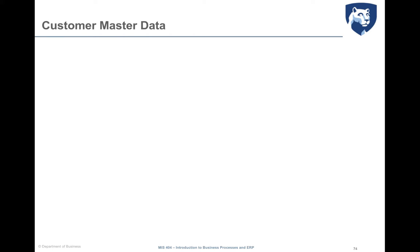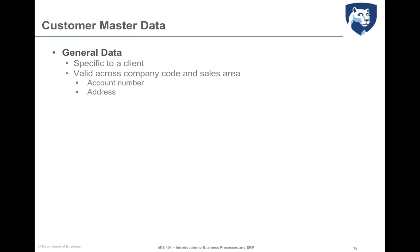When we talk about customer master data, it includes data that are needed to conduct business with customers and to execute transactions specifically related to the fulfillment process. The data in the customer master are divided into three segments: general data, accounting data, and sales area data, and these data are in a strict relationship with each other. General data are defined at the client level and are valid for all client sales areas and company codes.